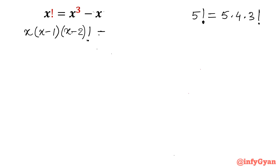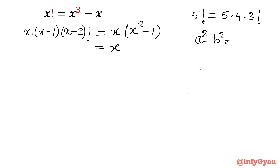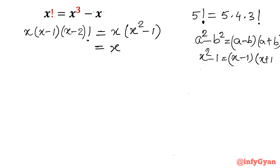Equal to — why have I done this? I will give you the answer in just a minute. From the right hand side, take x common — that gives x squared minus 1. That is nothing but the difference of squares: a squared minus b squared is a minus b times a plus b. So you can write x squared minus 1 as x minus 1 into x plus 1. Put that here: x minus 1 into x plus 1.